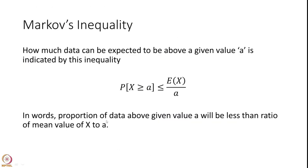What Markov's inequality really says is: how much of the data can be expected above a given value a? This bound shows it cannot be larger than the ratio of the expected value — the mean value of x — divided by the quantity a. This is called Markov's inequality.